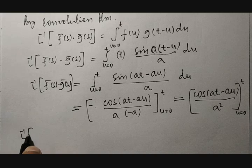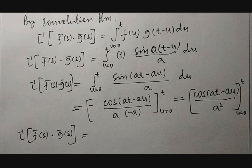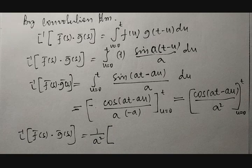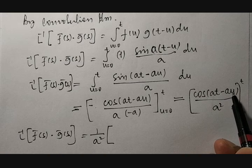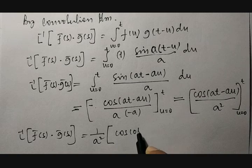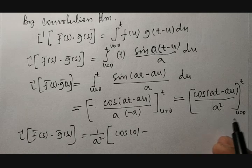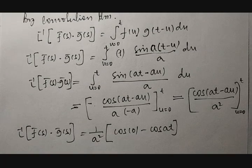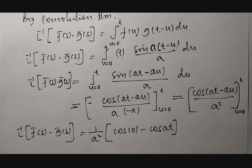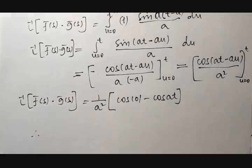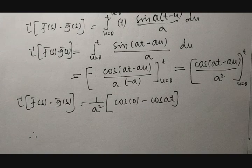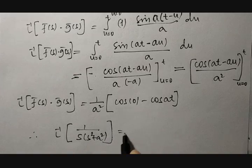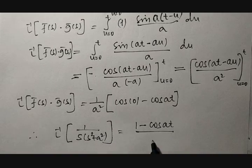Therefore, Laplace inverse of f̄(s) into ḡ(s) is equal to: substituting the upper and lower limits, 1 by a squared taken common. Substituting upper limit u equal to t gives cos(at minus at), which is cos 0, which equals 1. Substituting lower limit u equal to 0 gives cos(at). Therefore, finally, Laplace inverse of 1 divided by s into s squared plus a squared is equal to 1 minus cos(at) divided by a squared.